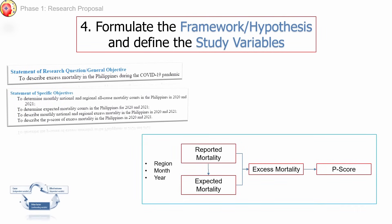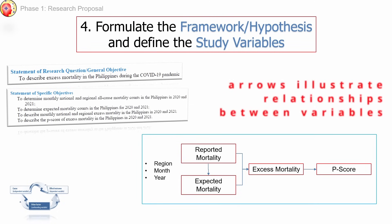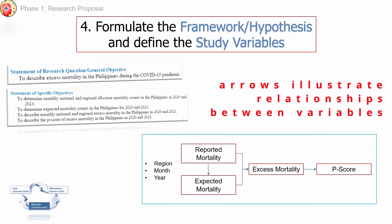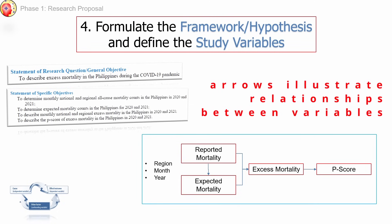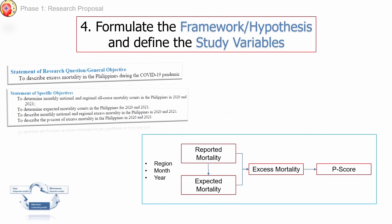Reviewing our objectives from earlier, laboratory findings were not originally included. So at this point, let us update our objectives to include laboratory findings — particularly cardiac and hematologic laboratory findings. Referring back to the real-life example, its operational framework shows the relationships of all variables identified in the specific objectives. It is also good to provide a short narrative explanation of the operational framework.